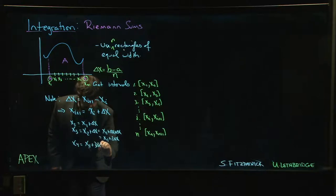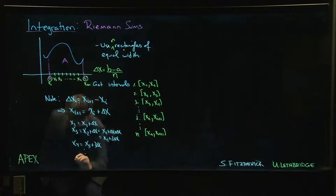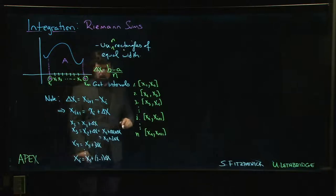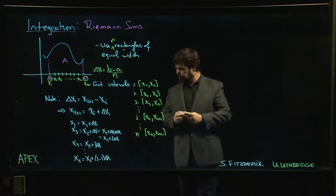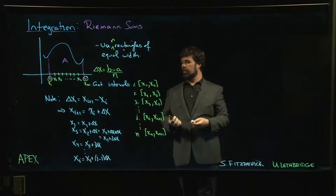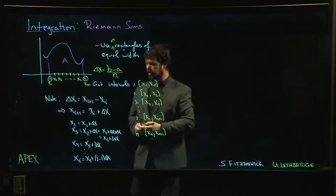In general, xi will look like x1 plus (i minus 1) - notice it's always one less - times delta x. Or if you like, xi+1 will be x1 plus i times delta x. So this gives you a nice formula now for generating all of those points, all of this information, all this detail here.